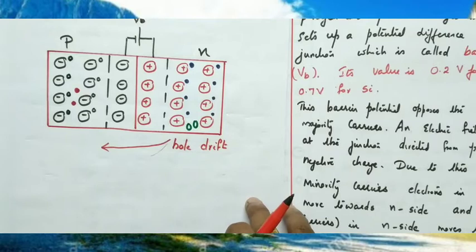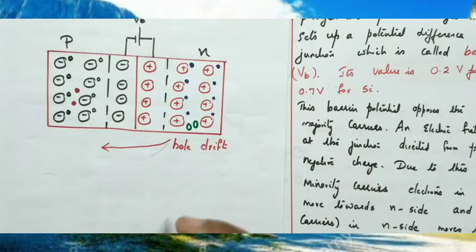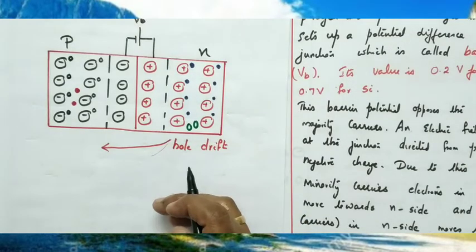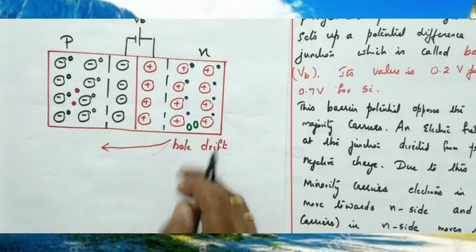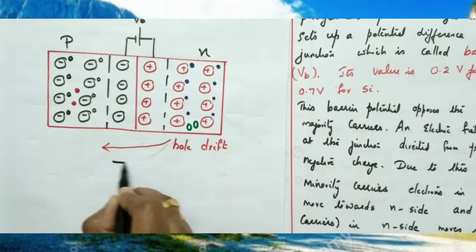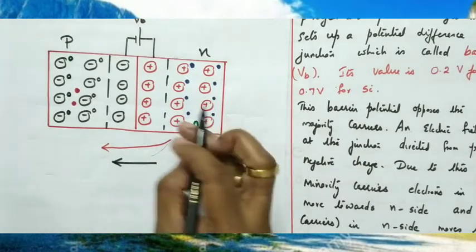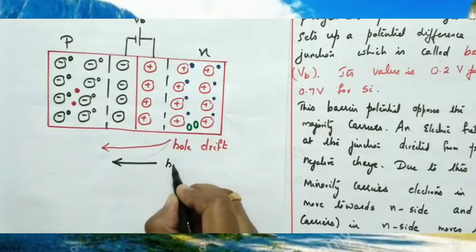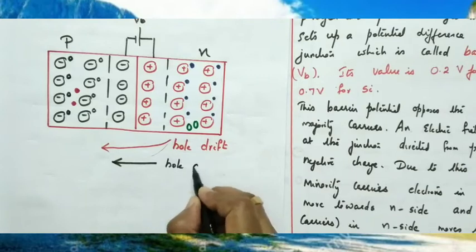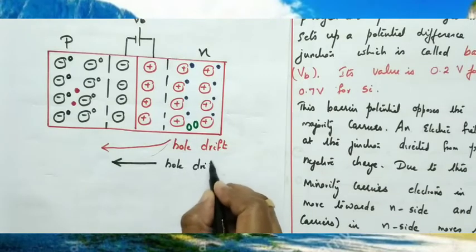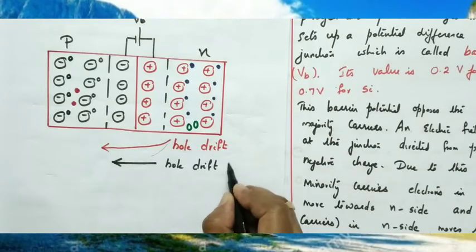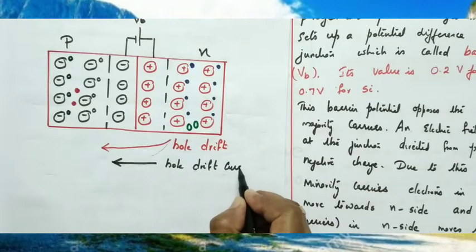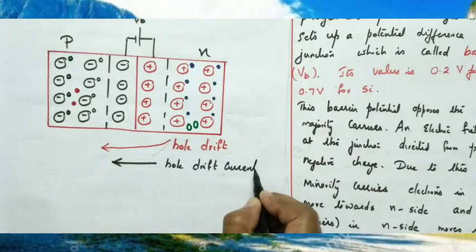If holes move from N to P, there is a resulting current. The direction of hole drift current is also from N to P.